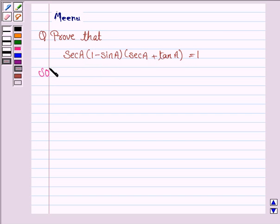So let's now move on to the solution. We'll start with LHS and we'll prove that LHS is equal to 1 by simplifying it. LHS is secant A into 1 minus sine A into secant A plus tan A.